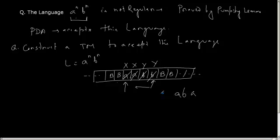So then how will you draw this? I am in state Q0. On reading A, I am writing X and moving towards right. And the state machine should go to a new state Q1.